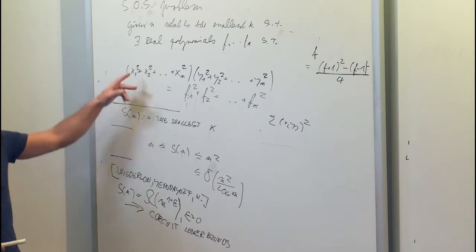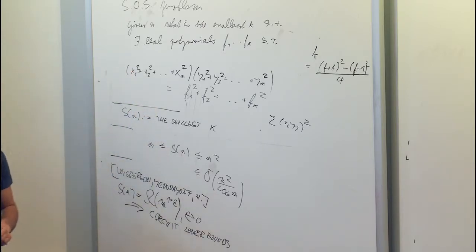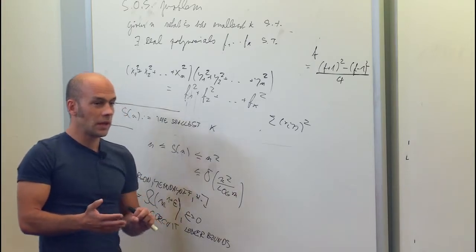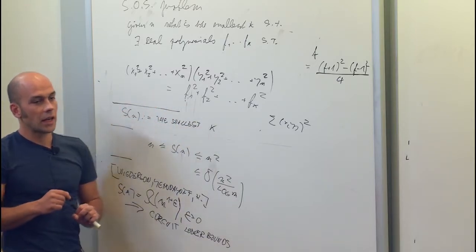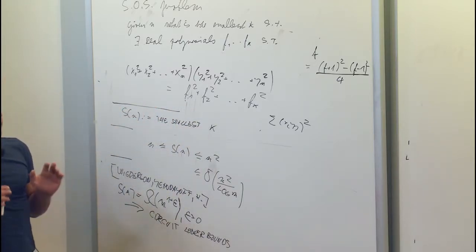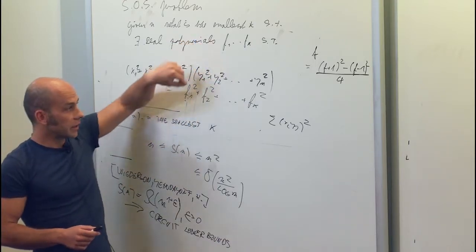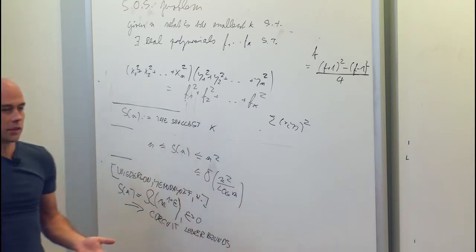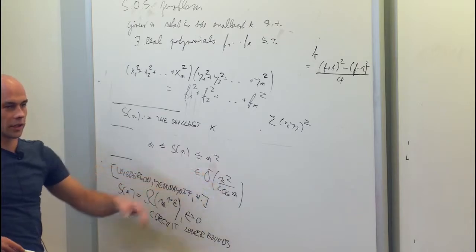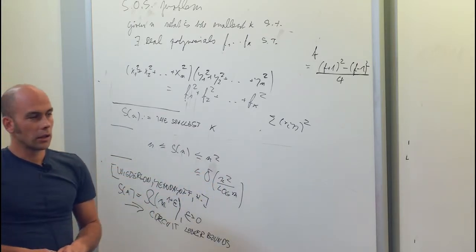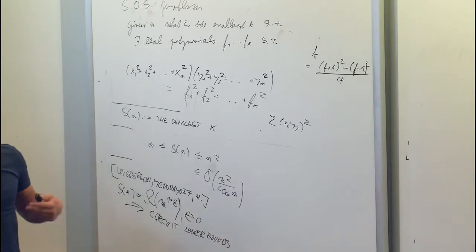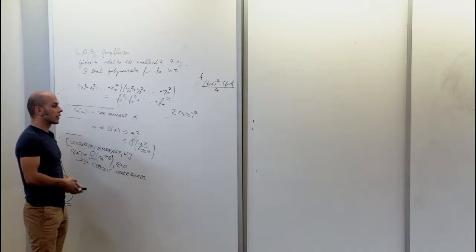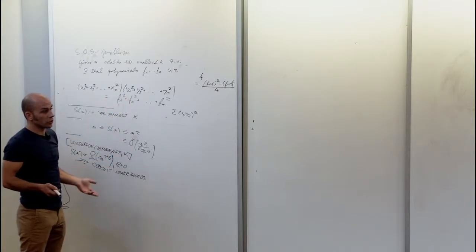Question: does the field matter? I think it shouldn't, as long as the field has characteristic different from two — if it has characteristic two, the problem trivializes. The problem makes sense over every field as long as you insist those f's are bilinear. I would guess that over any field the answer is the same, whether rational or real, but I cannot prove field independence.